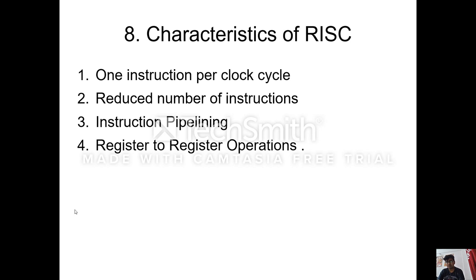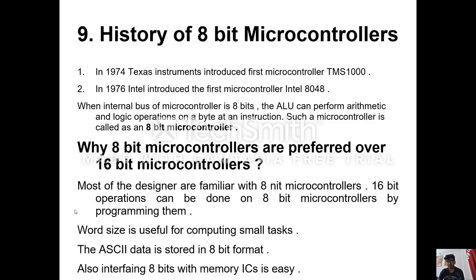An example of a RISC microcontroller is AVR. Before going into AVR microcontroller, we will see the history of 8-bit microcontrollers. In 1974, Texas Instruments introduced the first microcontroller with the name TMS-1000. In 1976, Intel introduced the first microcontroller Intel 8048. When the internal bus of a microcontroller is 8-bit, the ALU can perform arithmetic and logic operations on a byte per instruction. Such a microcontroller is called an 8-bit microcontroller.